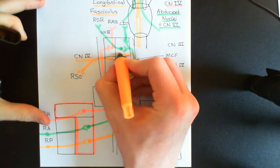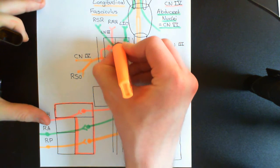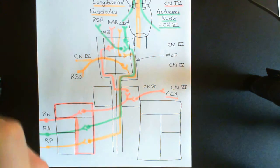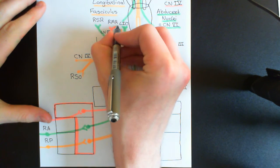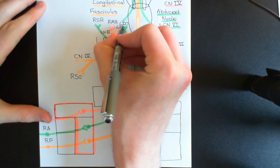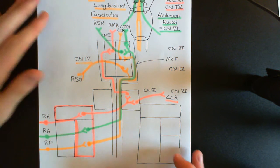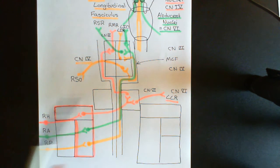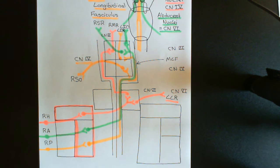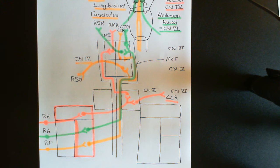Up in the left oculomotor nucleus, alpha motor neurons come out with the left oculomotor nerve and go off to innervate the left inferior rectus muscle. That's why I didn't want to draw it on both sides — it's complicated enough with just one side. So these are the connections of all three semicircular canals on the right hand side, showing how they are connected to the muscles they are going to activate.